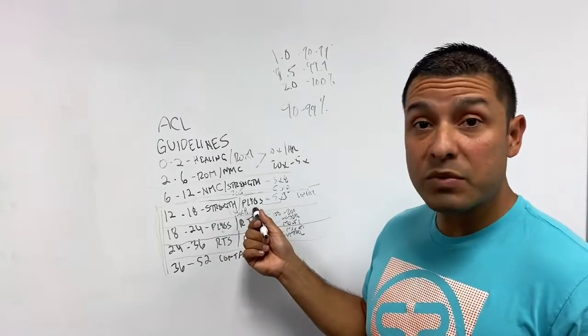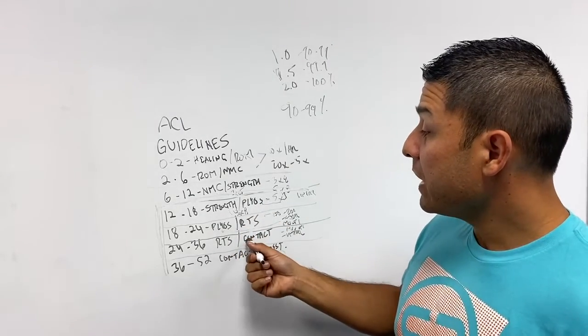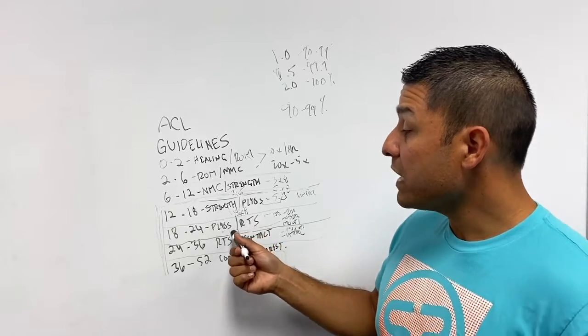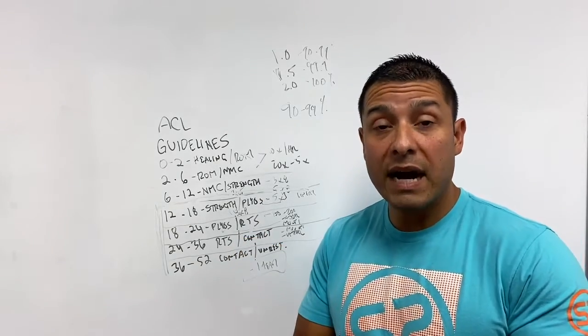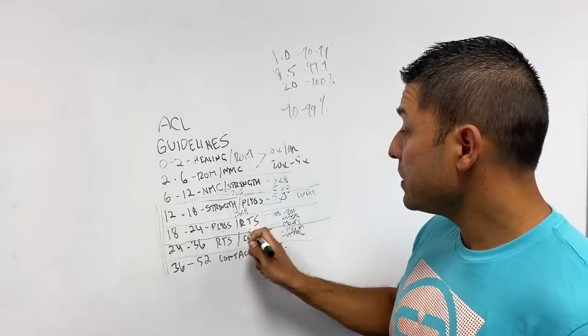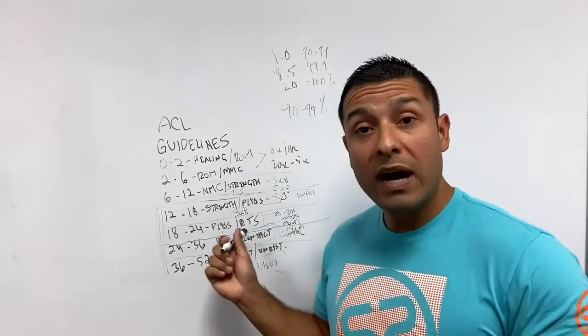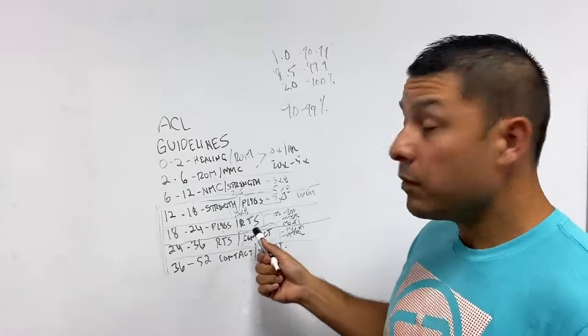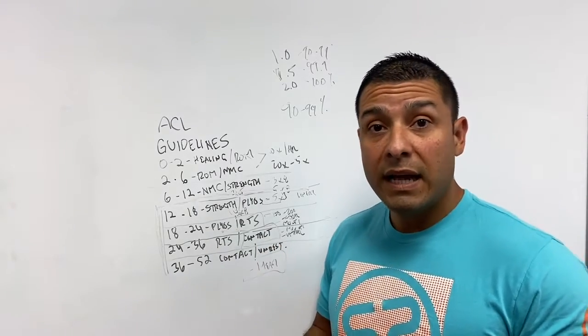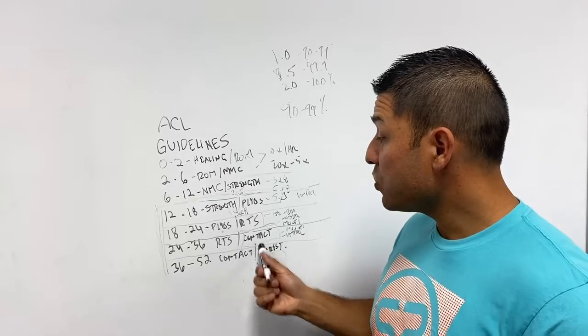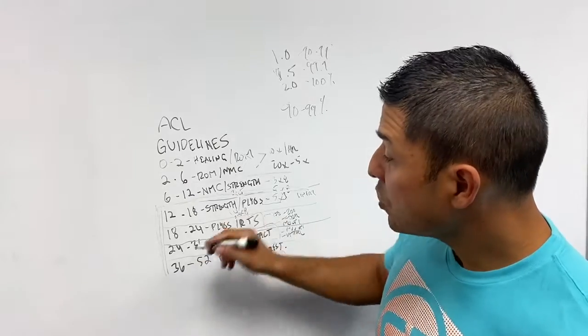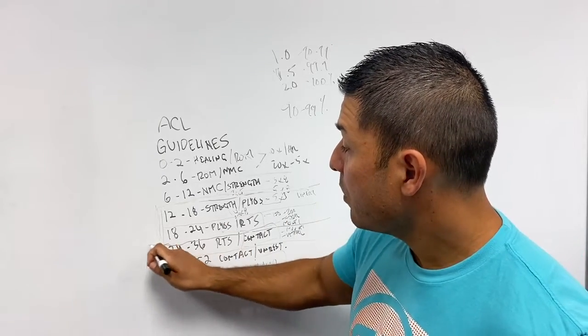And so those plyo progressions, they need to be consistent with those. And those have to be two to three times a week as they start. And then entering in to five times a week of actual ground contacts to ensure that they're going to be returning to sport. And now when you start adding in contact, you have to make sure that you add in multiple versions of contact, anticipated and unanticipated contact, because that's where they're going to have the most trouble.